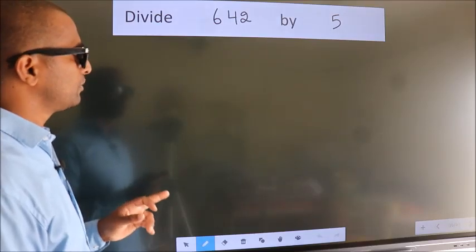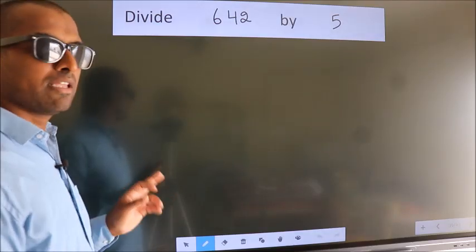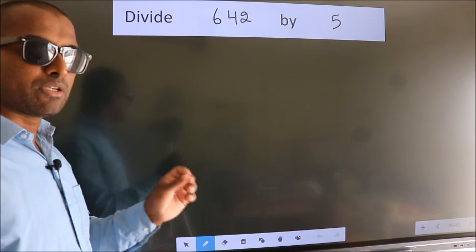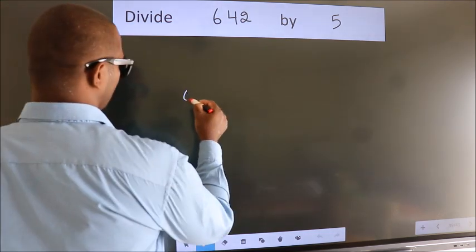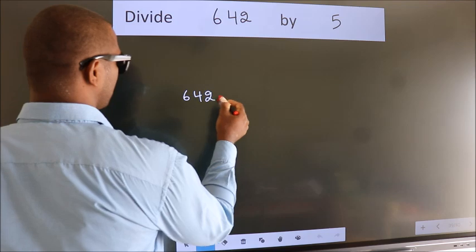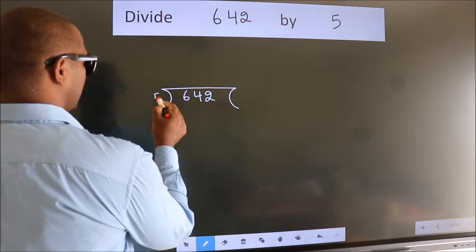Divide 642 by 5. To do this division, we should frame it in this way. 642 here, 5 here.